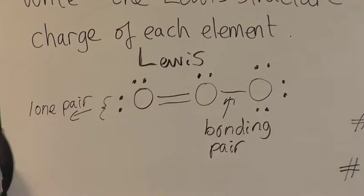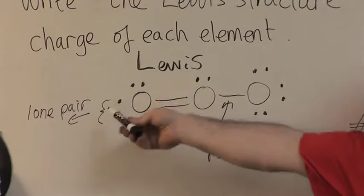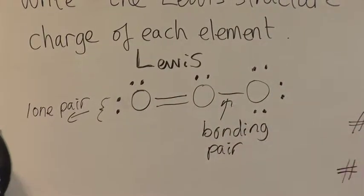And these lines are known as bonding pair electrons. So when I assign electrons, I allocate all of my lone pair, but only half of my bonding pair.